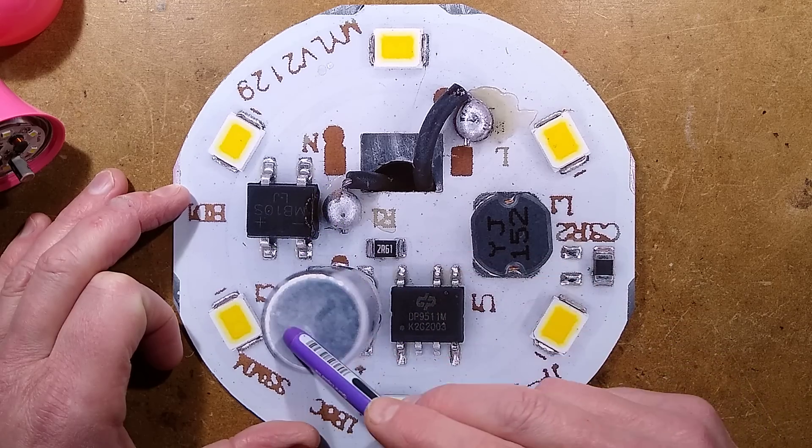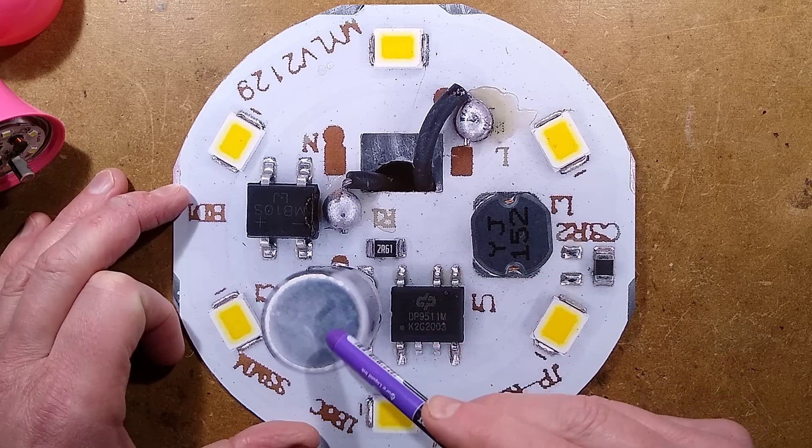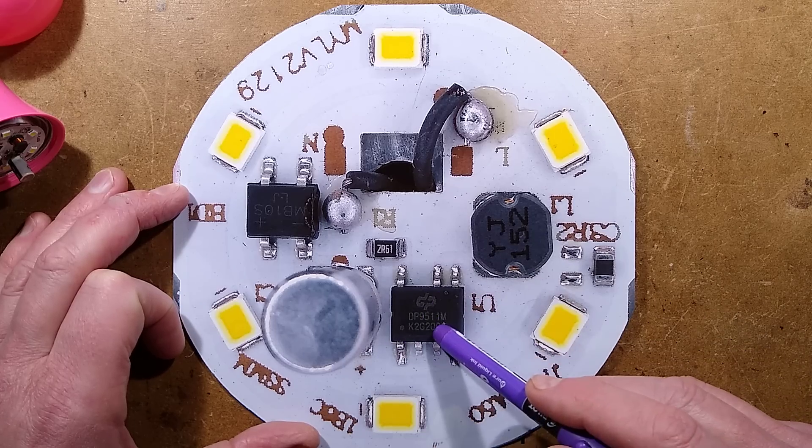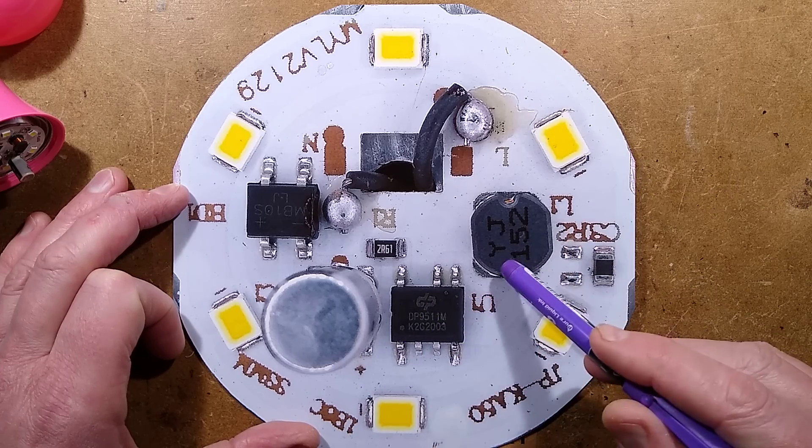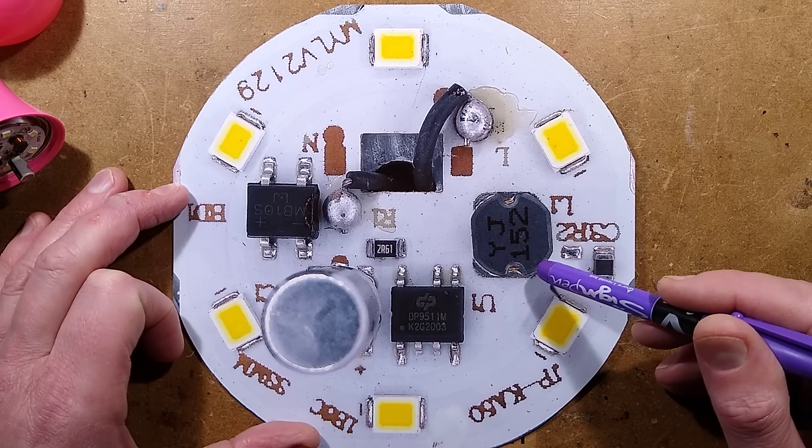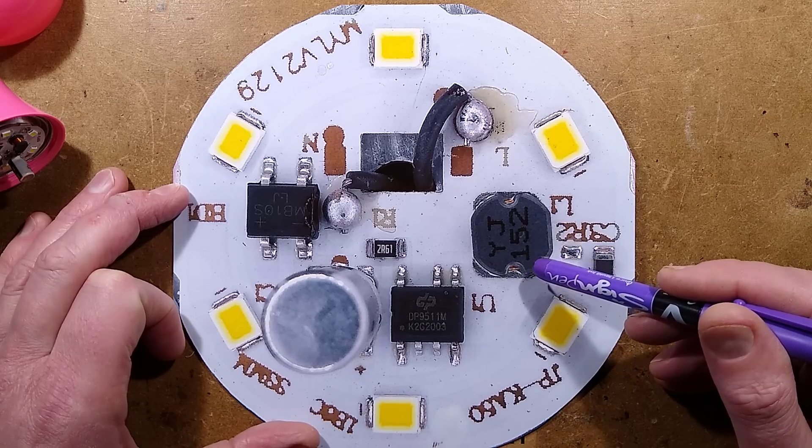We've got the live and neutral coming in and they pretty much go straight over to the bridge rectifier. The output from the bridge rectifier goes to this capacitor which is a 2.2 microfarad 400 volt capacitor and then to this dedicated LED driver chip with an inductor.